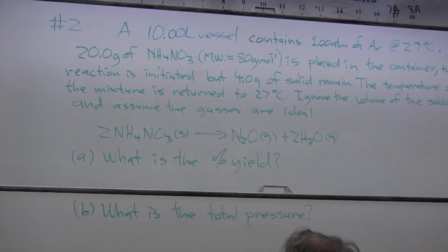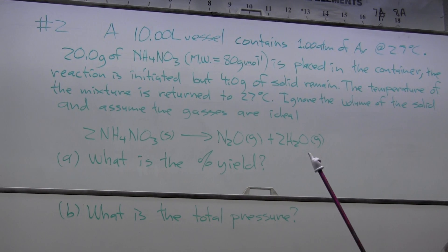A 10-liter vessel contains one atmosphere of argon at 27 degrees Celsius. 20.0 grams of ammonium nitrate, NH4NO3, molecular weight is equal to 80 grams per mole, is placed in the container.